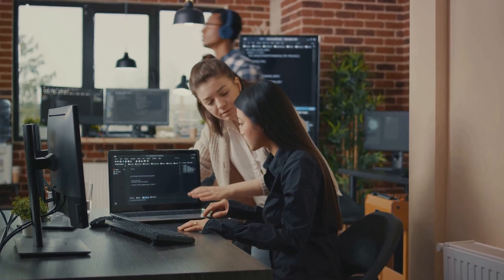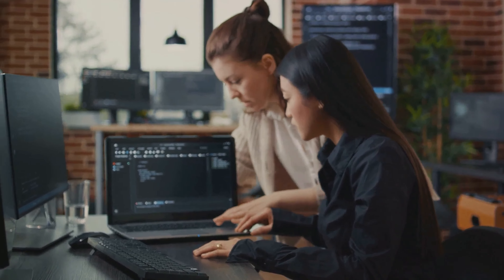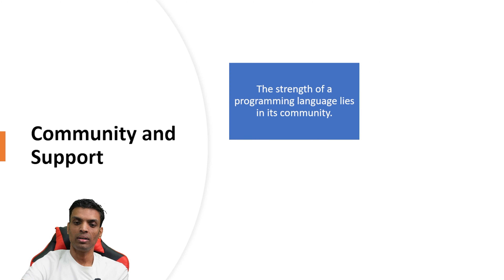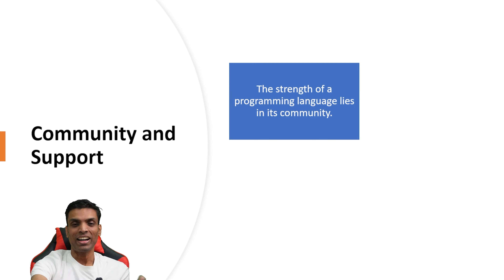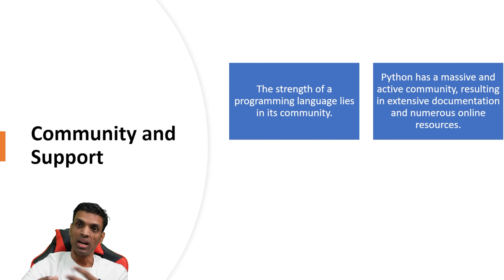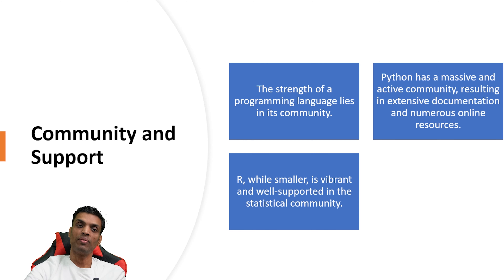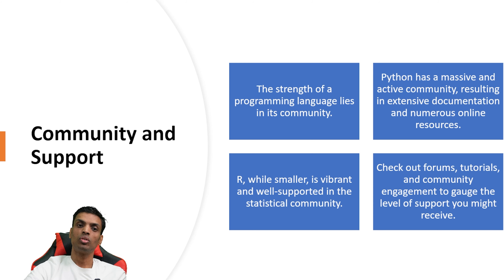Community and support is really crucial. If you can't find a particular solution or logic, it's recommended to go out to the web and look for a solution. Going to the community of any programming language to get a solution is really important. Python has a very large, active community that includes documentation and numerous online resources. R does have a community too, but it's relatively smaller compared to Python. There are forums, tutorials, and communities available that you can learn from.